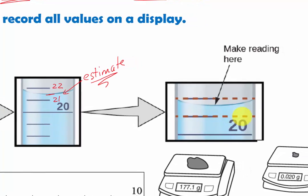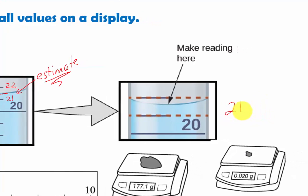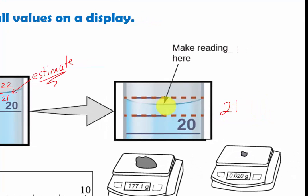For instance, we look at this one right here. We know it's going to be 21-something. I would say right here that would be about 0.7, so it's 21.7 milliliter. This value is estimated.